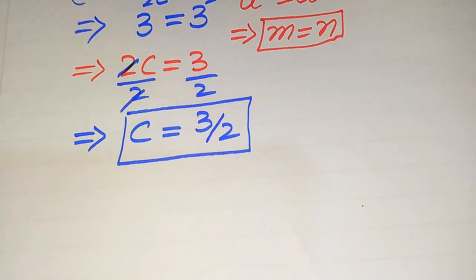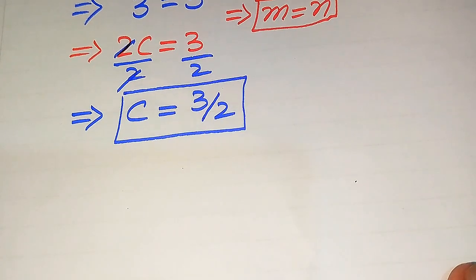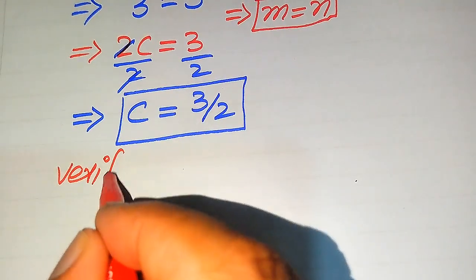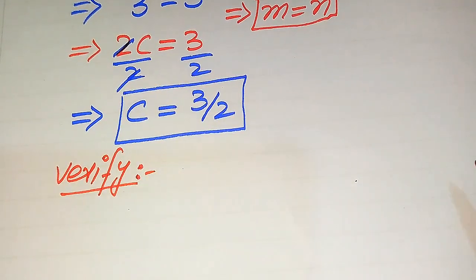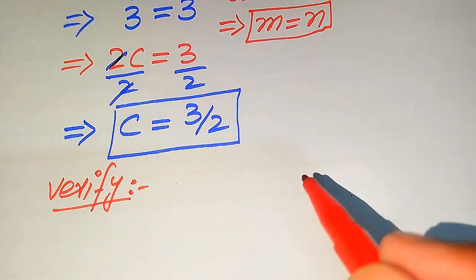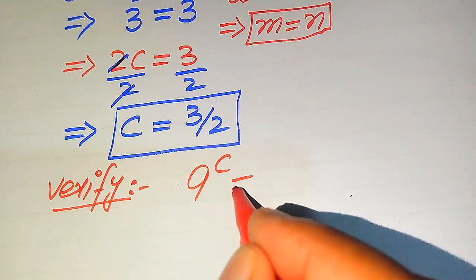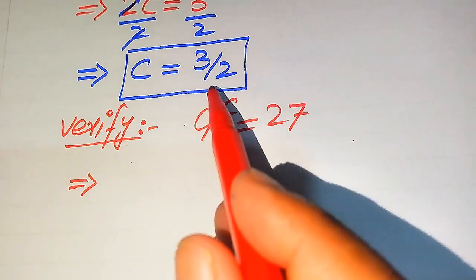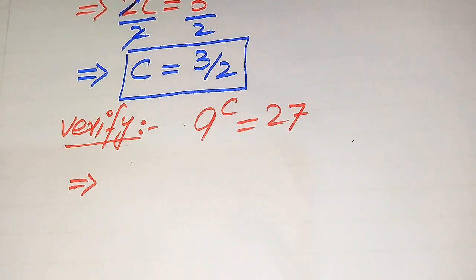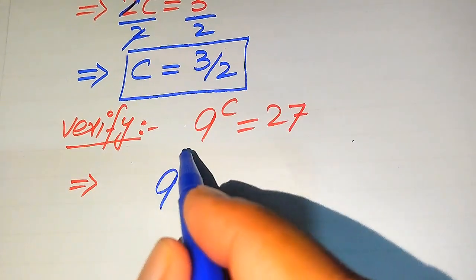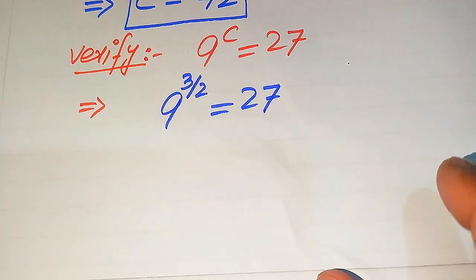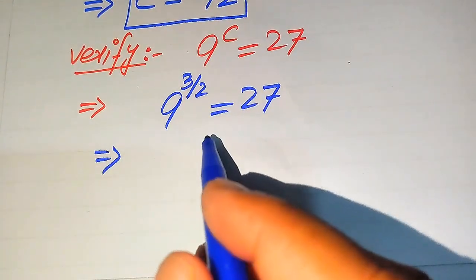In the next step we verify whether this root satisfies the given equation or not — in other words, whether it is a solution or an extraneous root. For verification, we copy down the given equation: 9 to the power of C equals 27. We substitute the value of C into the left hand side to check the behavior of this equation, so it becomes 9 to the power of 3 over 2 equals 27.